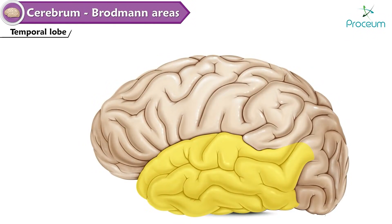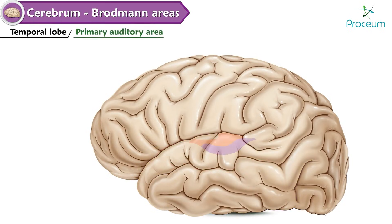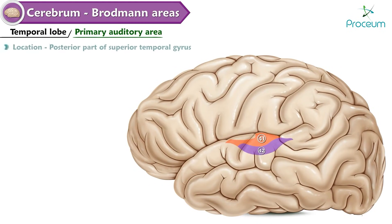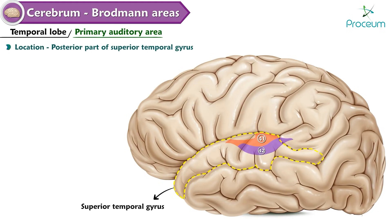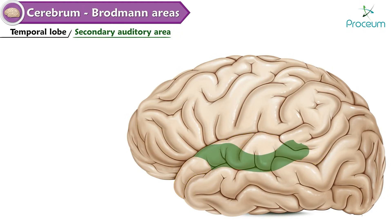Temporal lobe. It consists of the primary auditory area and secondary auditory area. Primary auditory area — Areas 41 and 42. Location: posterior part of the superior temporal gyrus. Functions: receives input from the medial geniculate body; perception and reception of auditory impressions.